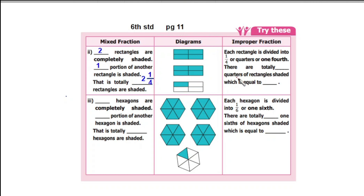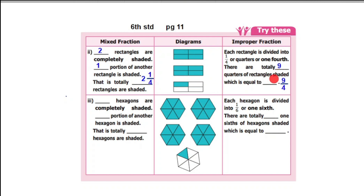Now we can see the improper fraction. Each rectangle is divided into 1 by 4, or quarters, or 1 fourth. One rectangle may be divided into 1 fourth parts. There are totally 9 quarters of rectangle shaded. So counting: 4 quarters in the first, 4 in the second, and 1 in the third — total 9 quarters. So here are totally 9 quarters of rectangle shaded, which is equal to 9 by 4.